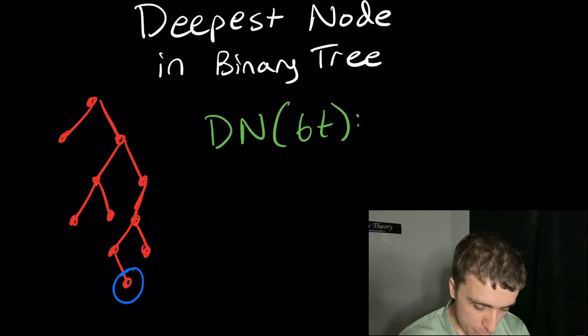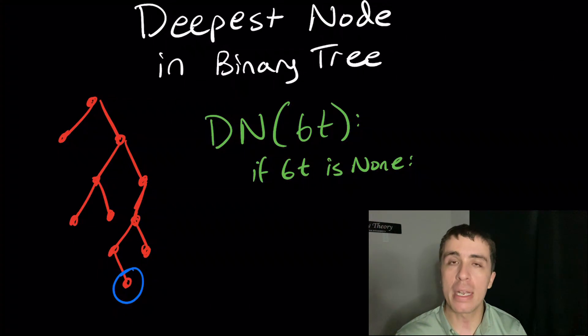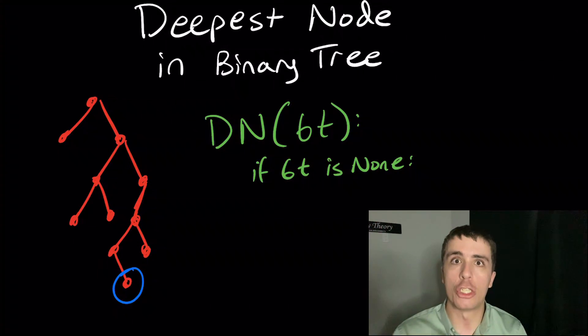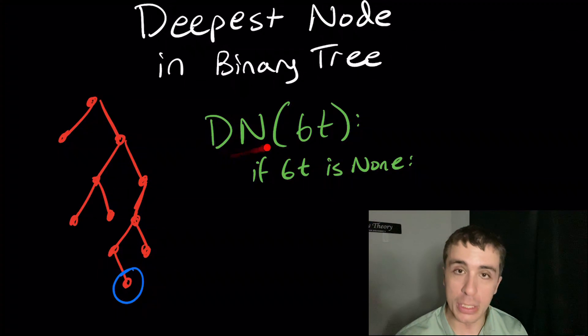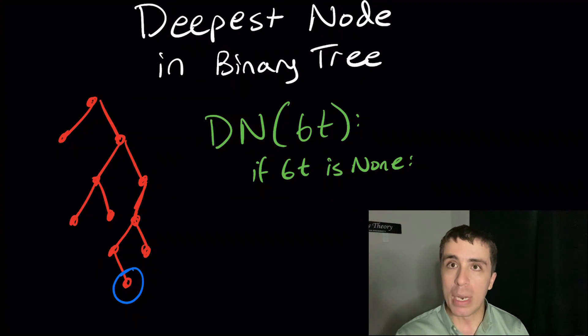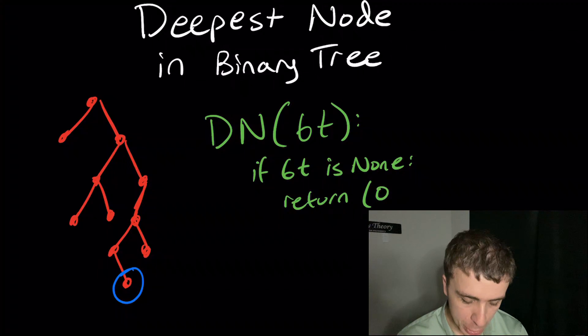You don't know anything about the structure of the tree other than the fact that it's binary. What are the base cases — the smallest possible trees you can deal with? You can deal with an empty tree or a tree with exactly one node in it. Otherwise, we'll have children underneath nodes and we'll have to deal with that. So if bt is none, which means there are no nodes in this particular binary tree, then we need to return the depth of the node because we need to compare the left and right children later in the recursive cases. We also need to return the node itself. So we return zero and none.